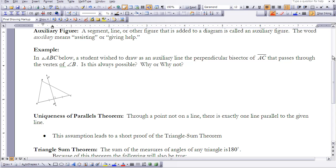In triangle ABC below, a student wished to draw as an auxiliary line the perpendicular bisector of AC that passes through the vertex of angle B. The question is, is this always possible? Why or why not? So here you have a picture of a triangle and the perpendicular going through it. And in this case, it's not going through B.